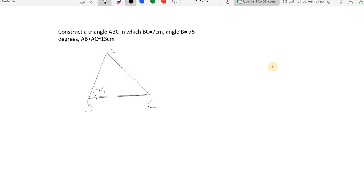AB plus AC would be 13 centimeters, this is 7 centimeters, and AB plus AC these two would add up to 13 centimeters. So the way to do this is very simple, let's go through this slowly.